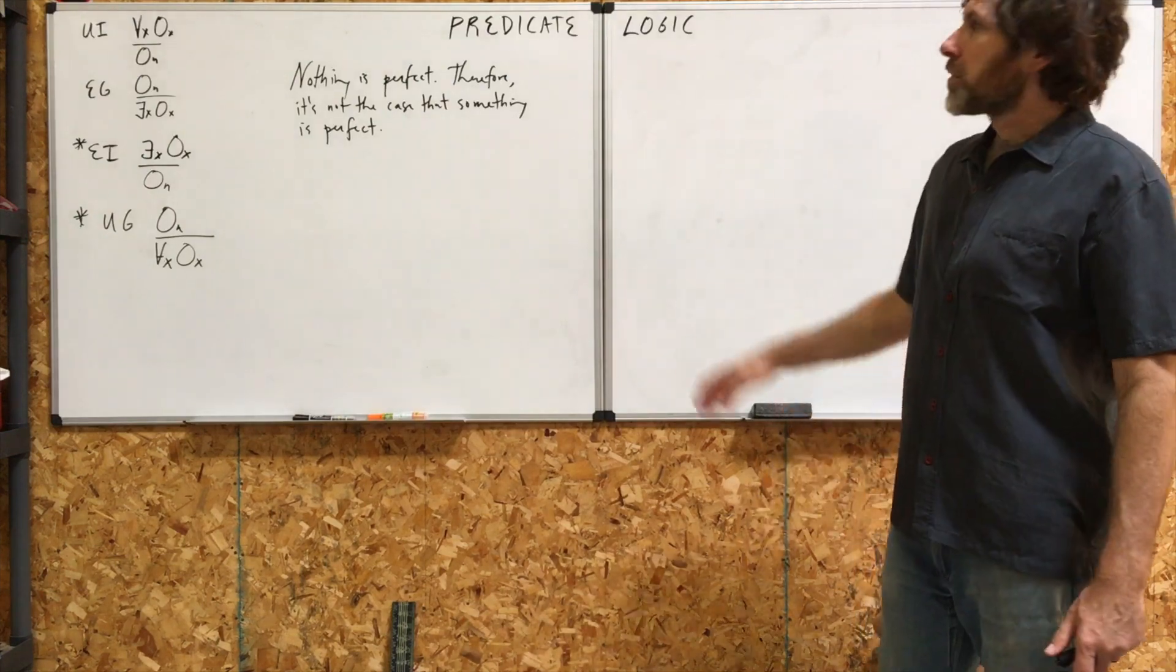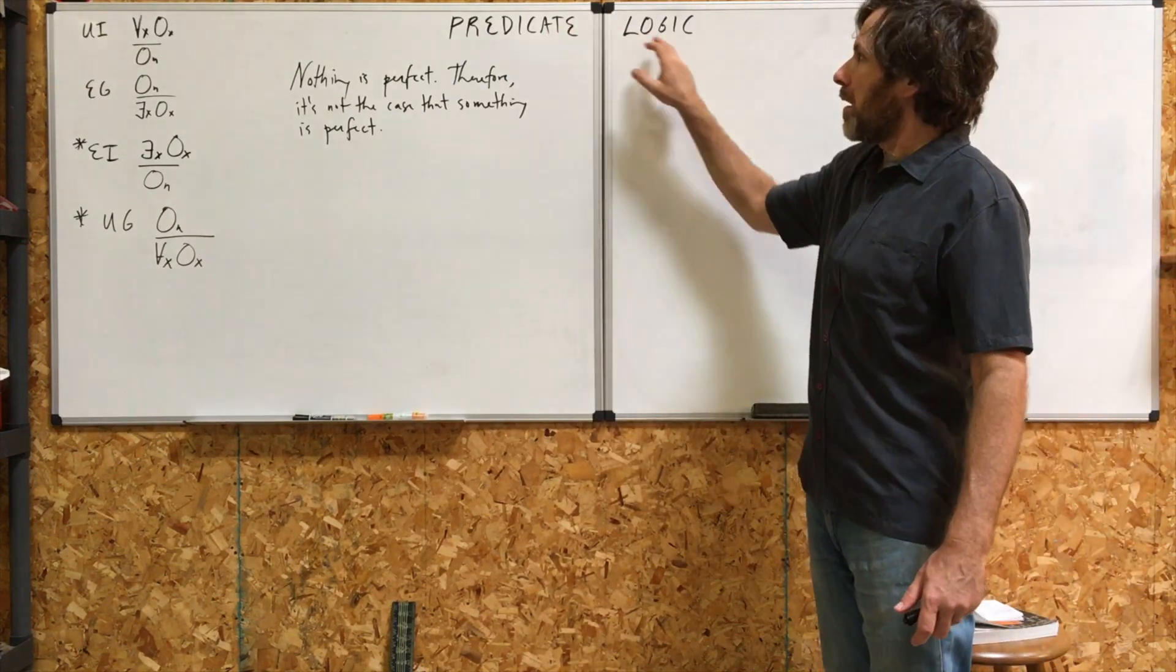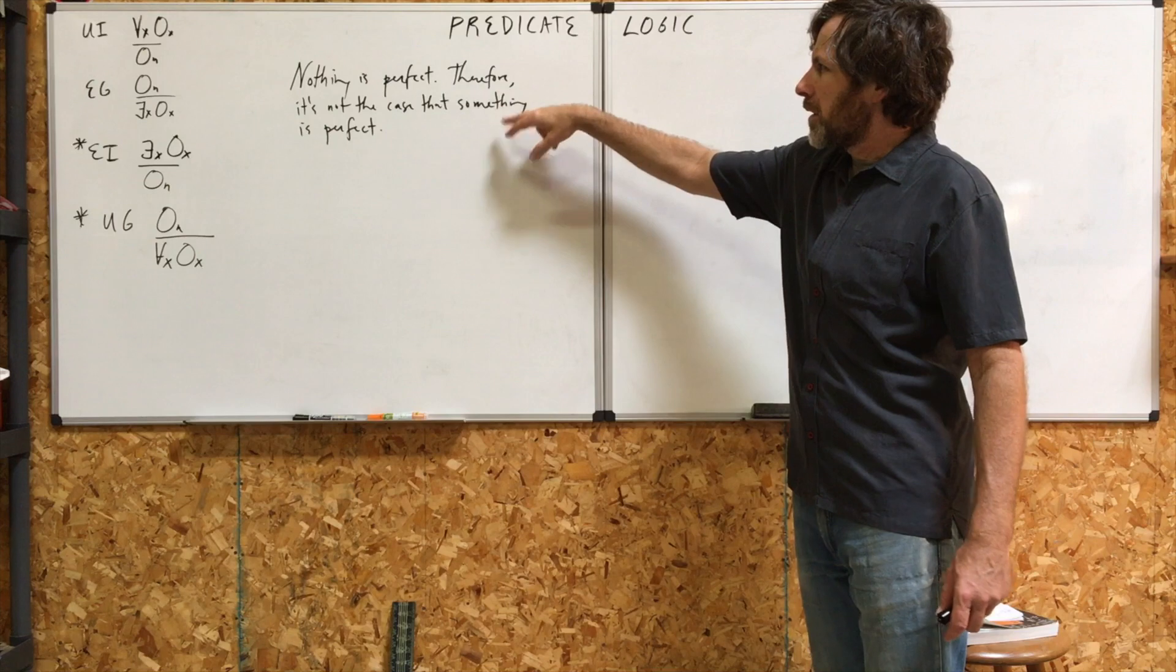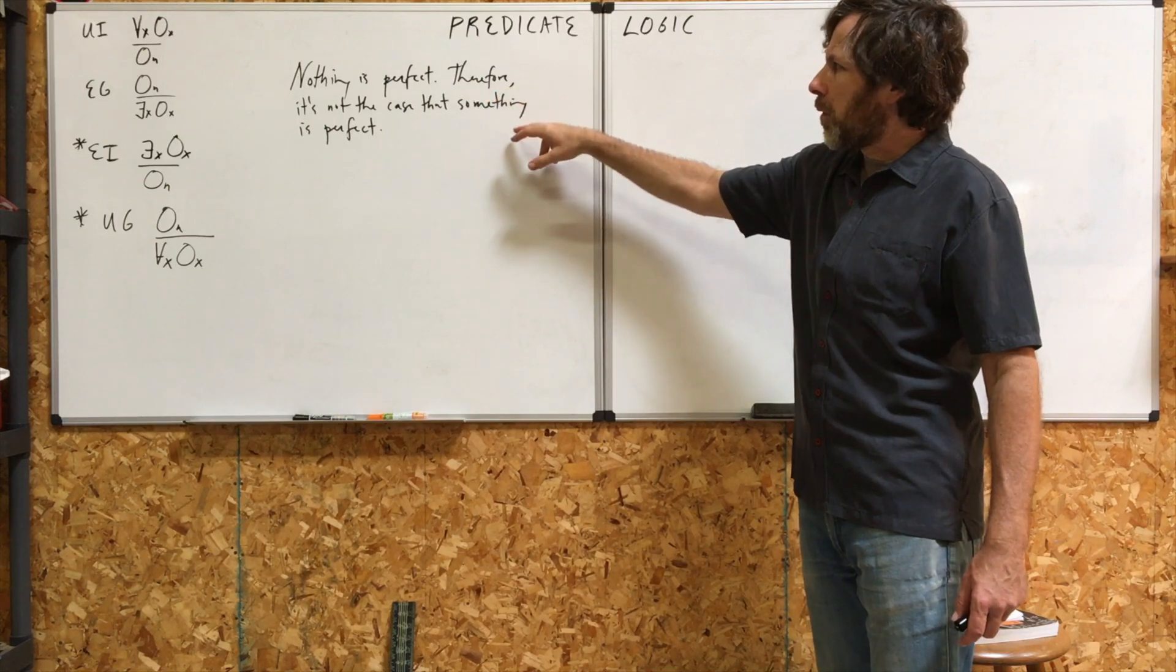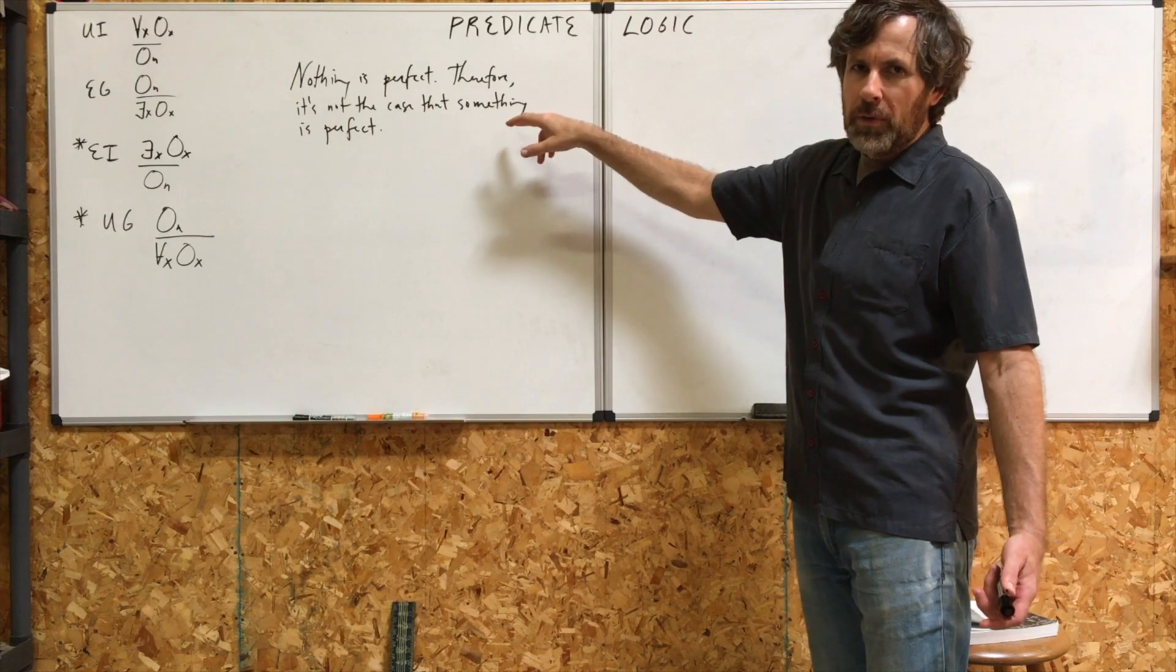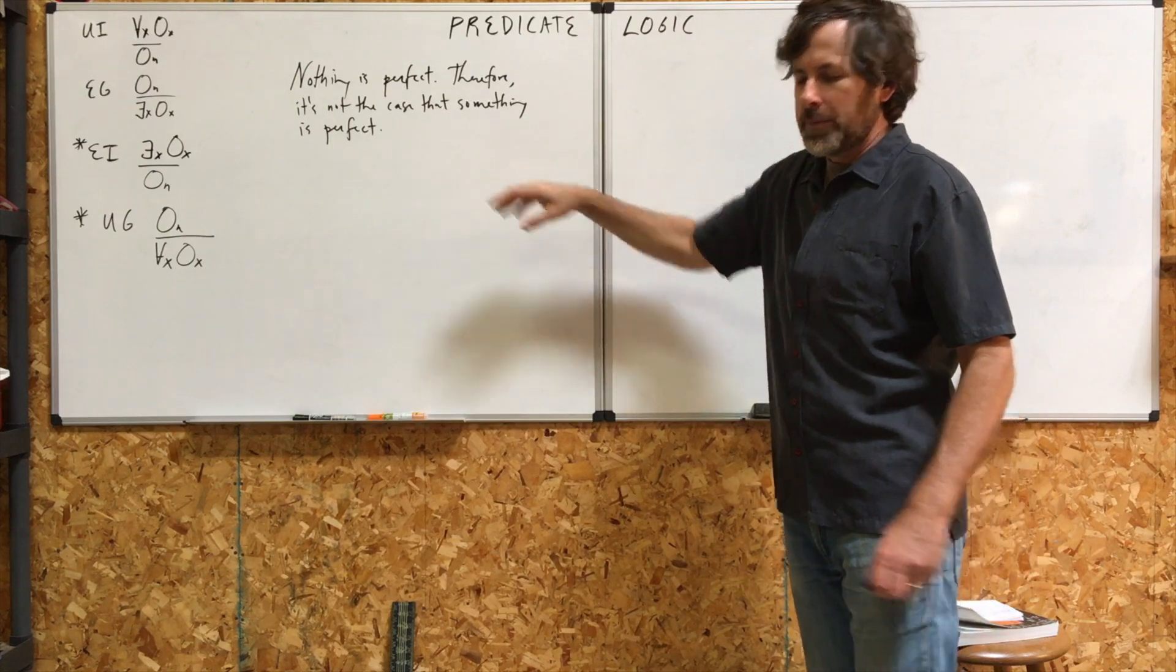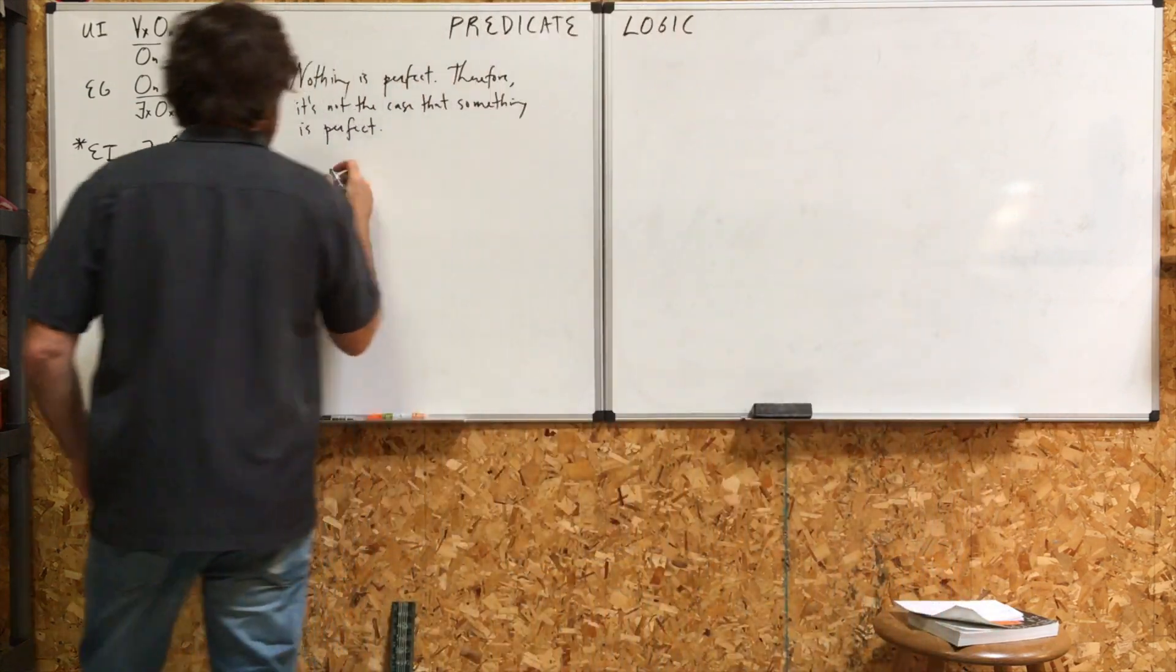Hello, logic people. Let's do some proofs in predicate logic. Let's begin with this short inference here. Nothing is perfect, therefore it's not the case that something is perfect. Let's symbolize this first of all.